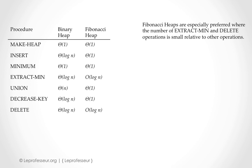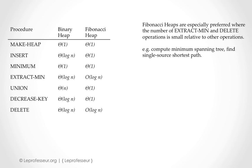So certainly there are certain applications where Fibonacci heaps are desirable — especially applications where the number of extract min and delete operations is smaller relative to other operations. Such applications can be found in network optimization algorithms, VLSI physical design automation algorithms, for example computing minimum spanning trees or single-source shortest path algorithms. In those algorithms, if you implement a Fibonacci heap, your program will be more efficient.